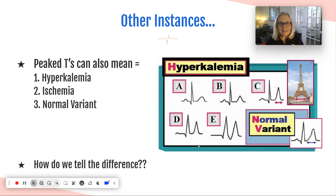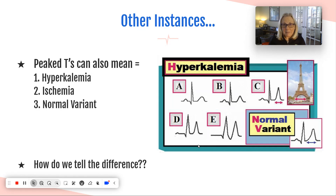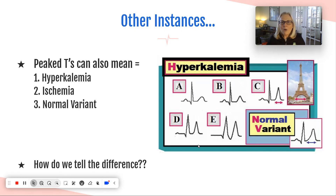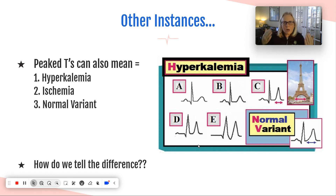There are other things that peaked T's can mean - they literally can mean just about anything. We just have to piece it together with other clues. It's like playing a game of clue. Peaked T's can also mean hyperkalemia, they can mean ischemia, and they can be normal. How do we tell the difference? We follow the clues, suspect a certain thing, and then follow through with further testing.